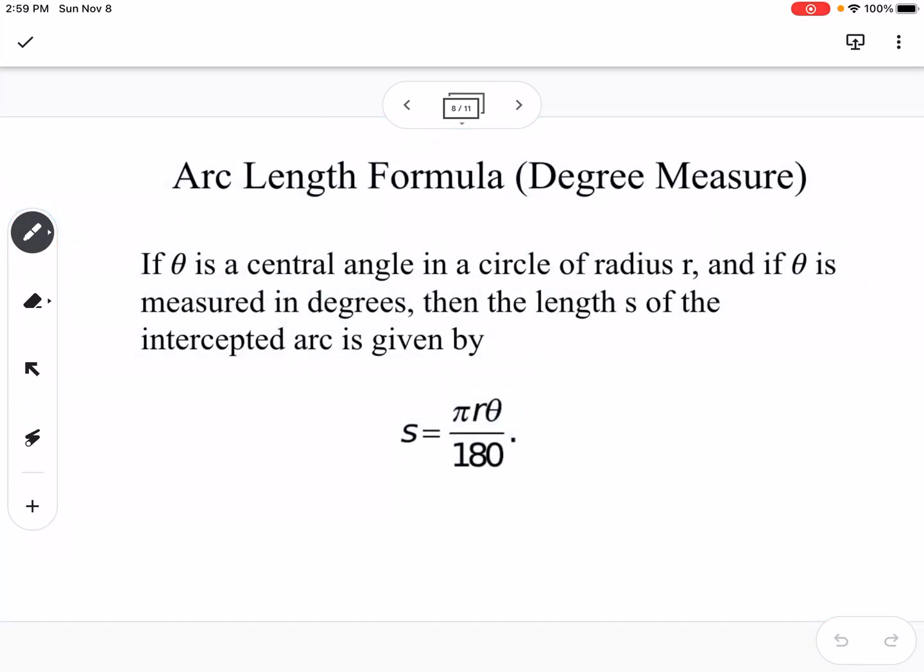We can also look at the arc length formula with degrees, and you can probably figure out where this formula comes from based on the π radians is equal to 180 degrees. So if θ is a central angle in a circle, and if θ is measured in degrees, then we use π times the radius times θ divided by 180.